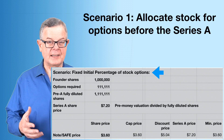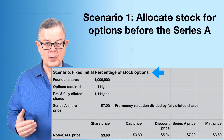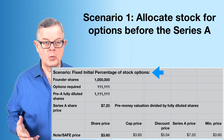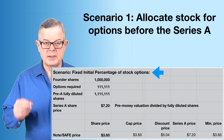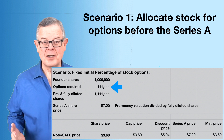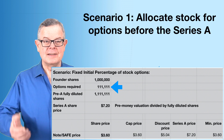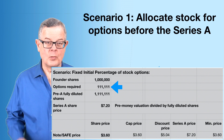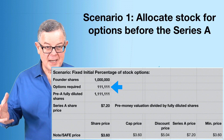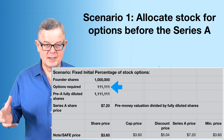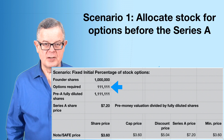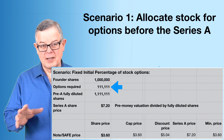In scenario one, where options are allocated before investment, you've got a million shares owned by the founders. You'll need to issue an additional 111,111 shares to reach just over 1.1 million total — that's how many shares it takes so that 10 percent of the fully diluted capitalization equals the stock option target.